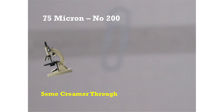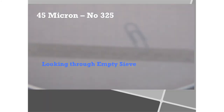Next, we observed a ruler and paperclip behind a 45-micron number 325 sieve. As you can see, there's only a faint shadow — the mesh almost completely stops the light.